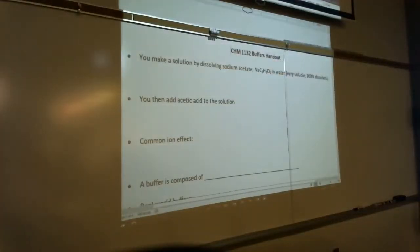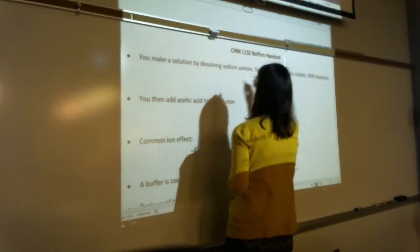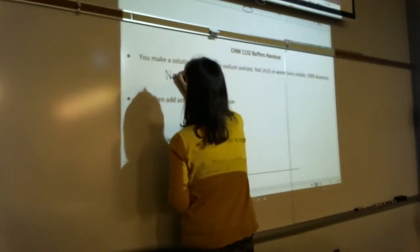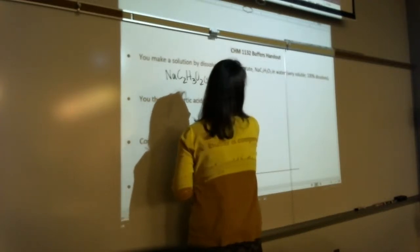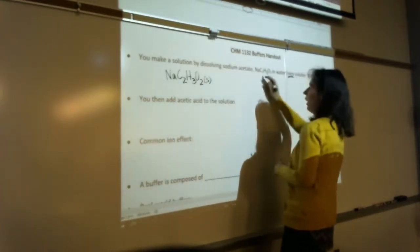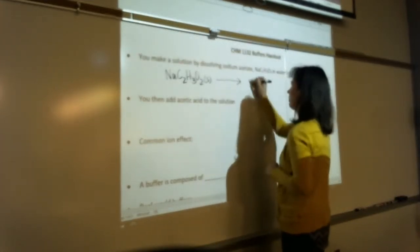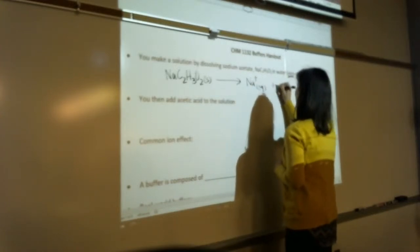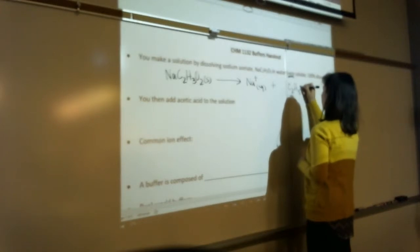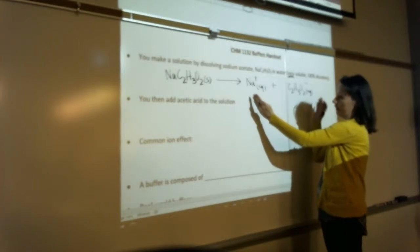We're going to talk about buffers, so let's talk a little bit about the theory. You make a solution by dissolving sodium acetate — NaC2H3O2 — in water, and it is extremely soluble. All acetates are very soluble. So this is not an equilibrium, this is a full dissociation. It becomes Na+ and acetate. It's 100% product favoring.